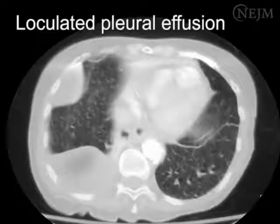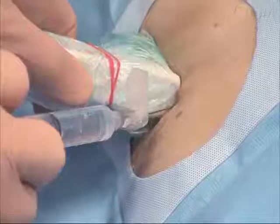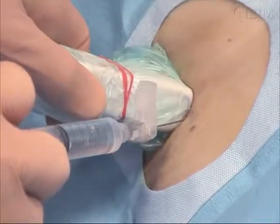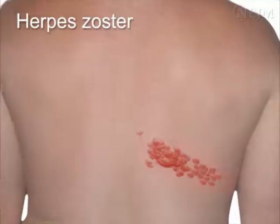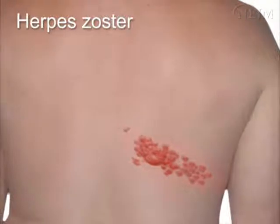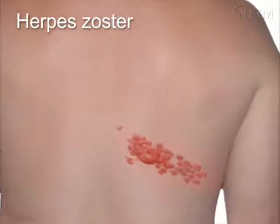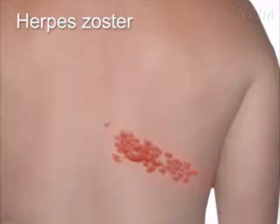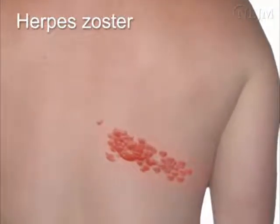In patients who have small or loculated effusions, the procedure should be performed by experienced operators, ideally with real-time imaging guidance. The thoracentesis needle should not pass through sites of cutaneous infection such as cellulitis or herpes zoster.